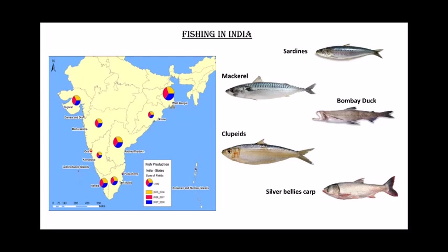From the Malabar coast to the Coromandel coast in eastern Tamil Nadu, the major fishes caught are sardines, mackerel, Bombay duck, and prawns.